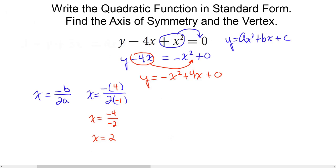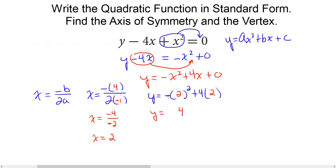Now that we have the x value for our vertex, we plug that into the equation and solve for the y value. So y equals negative (x squared) plus 4(x). With x equals 2: 2 squared is 4, and we bring down the negative to get negative 4. Then positive 4 times 2 is positive 8. Negative 4 plus 8 is 4, so y equals 4.